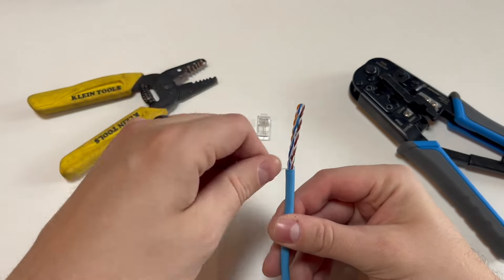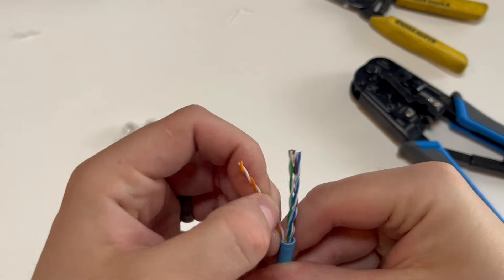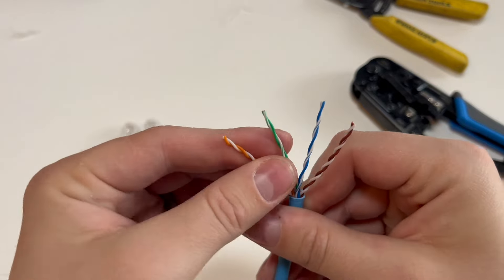Next cut back the internal ripcord and separate the 8 wires inside. As a side note, some higher quality CAT-6 cable may have an internal cable separator that will need to be cut off as well.